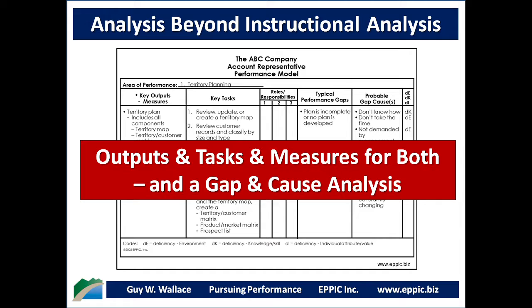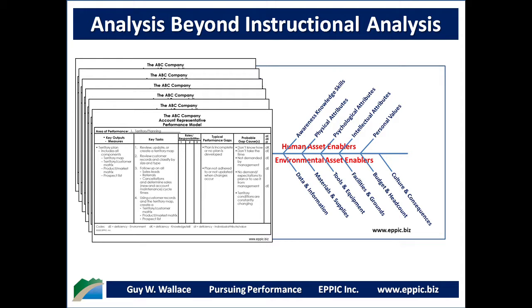We can look at those key outputs and their measures to determine if there are any typical performance gaps, and if so, what are the probable gap causes and what type of cause is it — is it a deficiency of the environmental assets that enable performance, or is it a deficiency of the individual performer's knowledge and skills, or one of their other individual attributes or values? Outputs, tasks, measures for both, and a cause-and-gap analysis are what the performance model format brings. When we have a collection of these performance models, we can begin to systematically derive all of the enablers — and this is important when we're doing our typical gap analysis or analysis beyond instructional analysis — we need to understand what enables performance and what are the gaps.